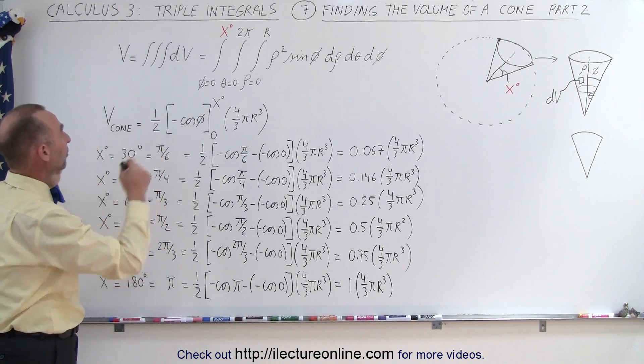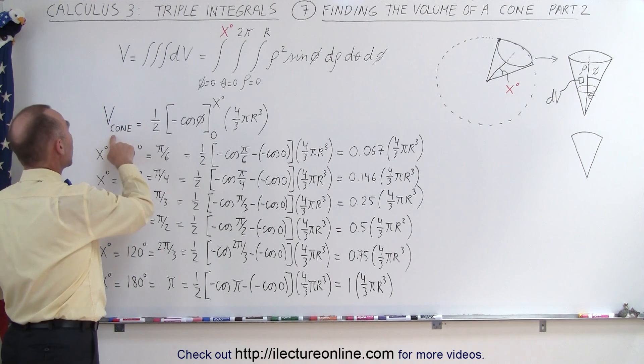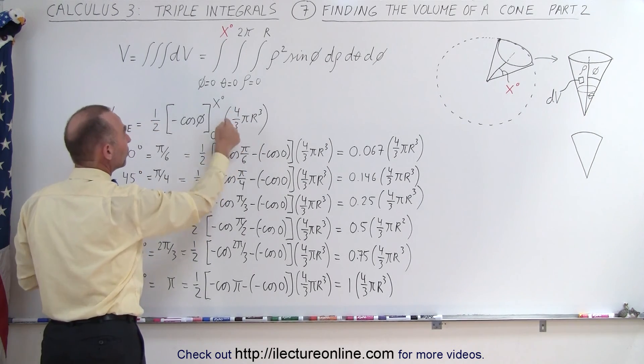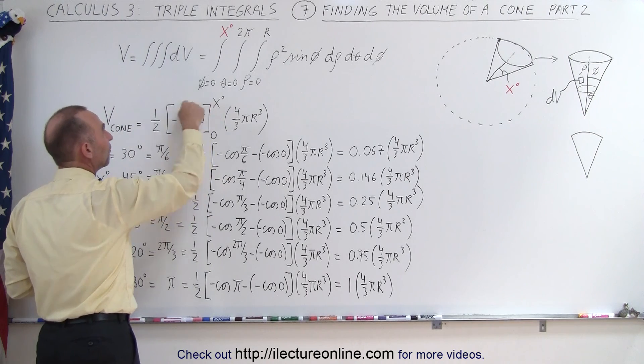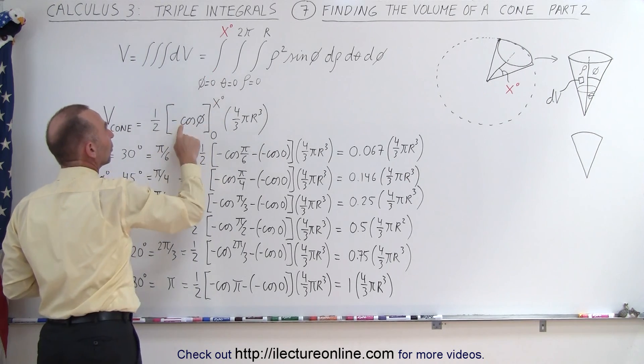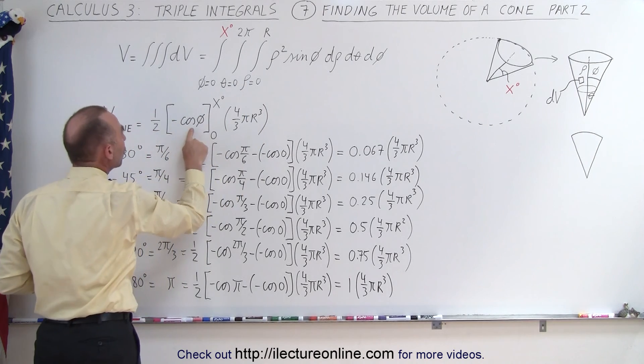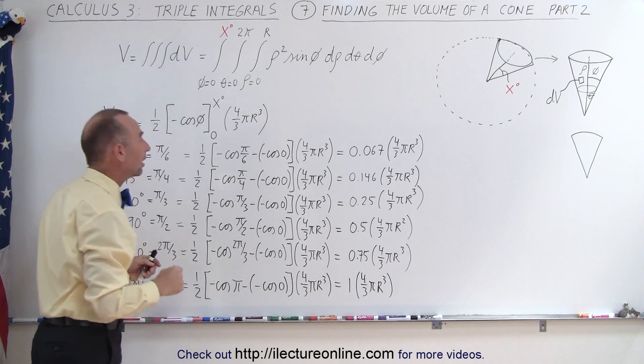Now notice that the general form is going to be the volume of the cone is one-half times four-thirds pi r cubed times the evaluation of the third integral which becomes the integral of the sine of phi d phi which is minus cosine of phi integrated from zero to whatever the size of the angle is.